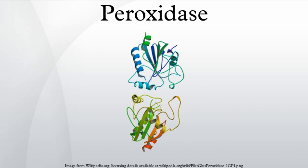Applications: peroxidase can be used for treatment of industrial waste waters. For example, phenols, which are important pollutants, can be removed by enzyme-catalyzed polymerization using horseradish peroxidase. Thus phenols are oxidized to phenoxy radicals, which participate in reactions where polymers and oligomers are produced that are less toxic than phenols. It can also be used to convert toxic materials into more harmless substances.